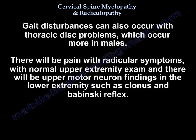Gait disturbance can also occur with thoracic disc herniation, which occurs in males. You will have pain with radicular symptoms, a normal upper extremity exam, and upper motor neuron findings in the lower extremity such as clonus and Babinski.